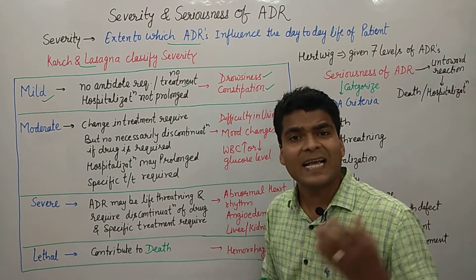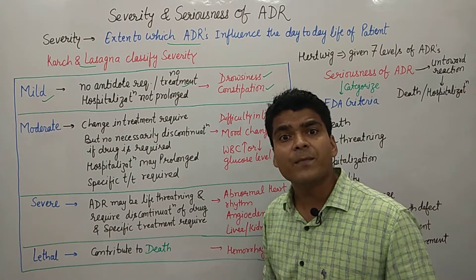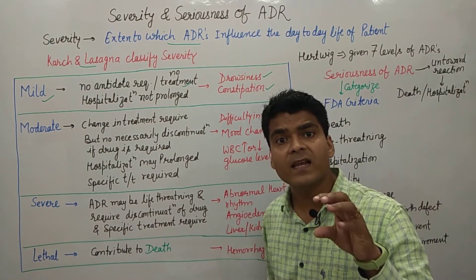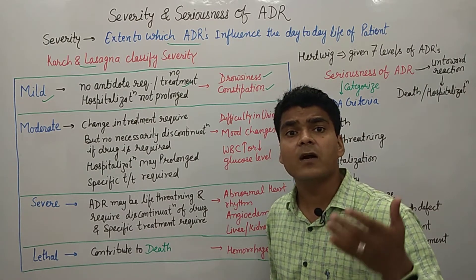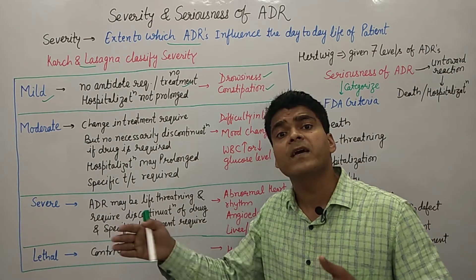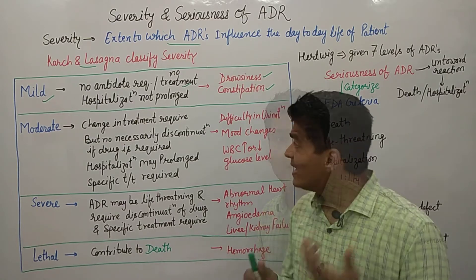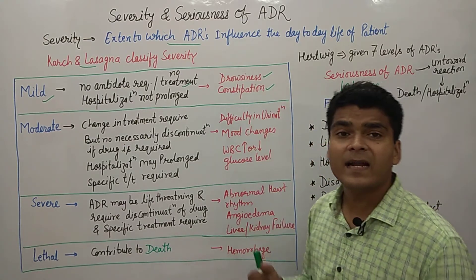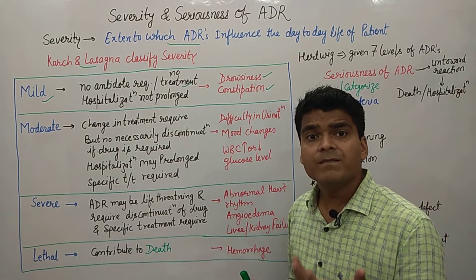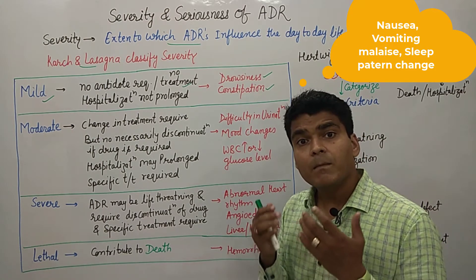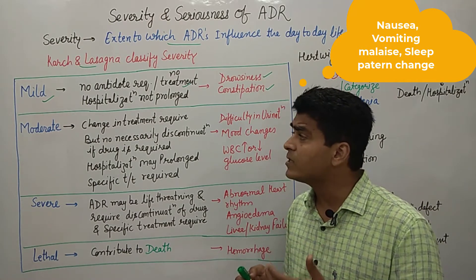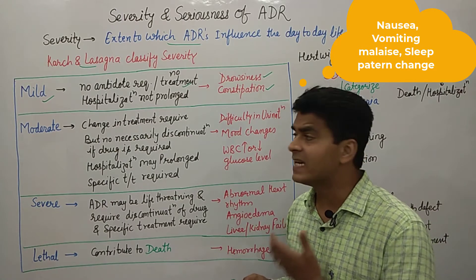For example, if a patient had an accident and a rod was inserted in the leg, opioids are given for pain relief, which may cause constipation. However, due to that constipation, the patient does not need to stay in hospital for a long time. Other examples of mild ADR include diarrhea, mild pain, nausea, vomiting, malaise, and changes in sleep pattern.